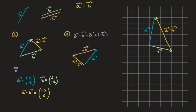Checking the result: to get from the tail of this yellow vector to its head, we move three units to the left — that's negative three — followed by six units upward. This confirms the components we calculated: (-3, 6). So method one definitely works.